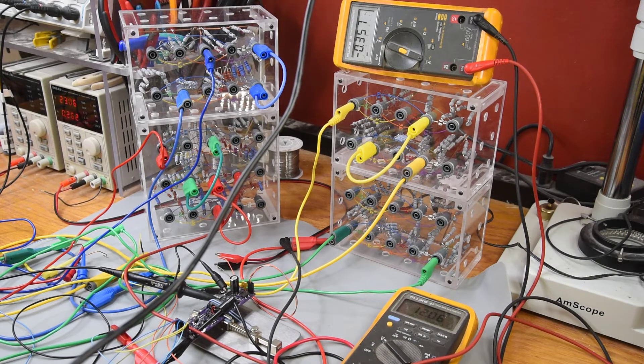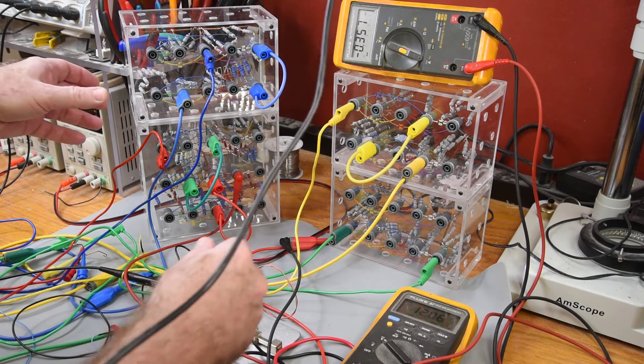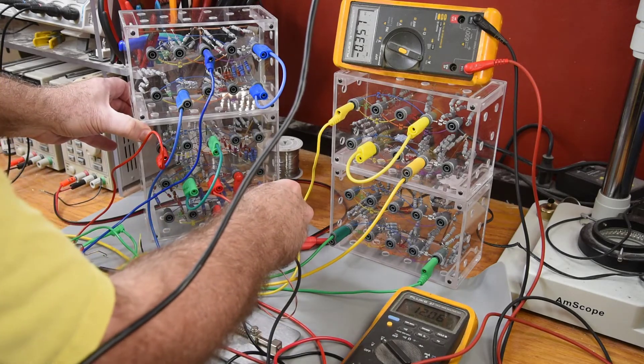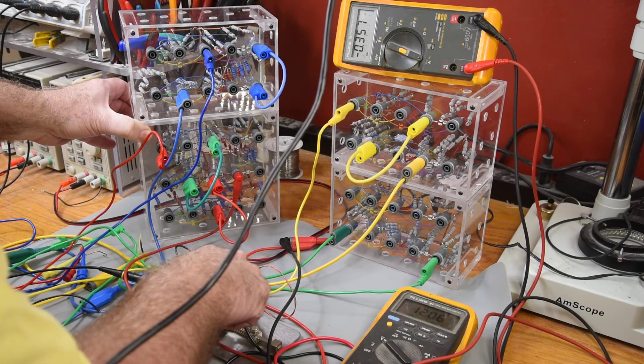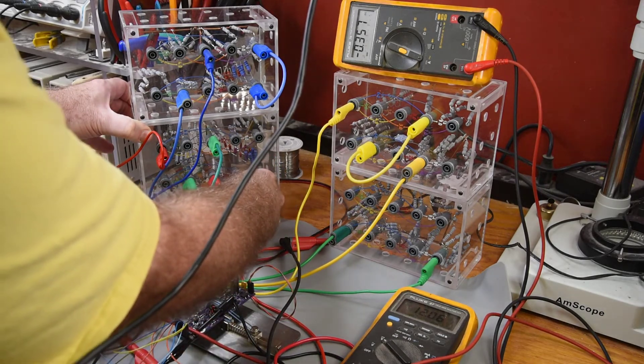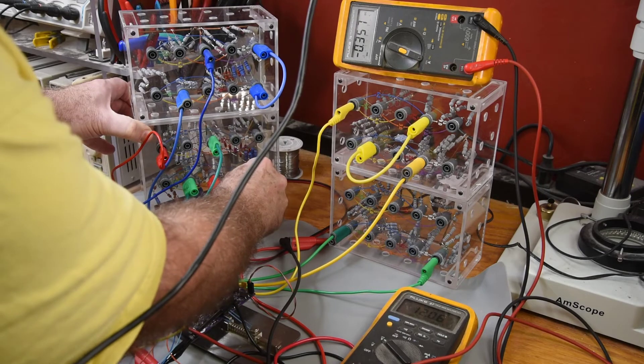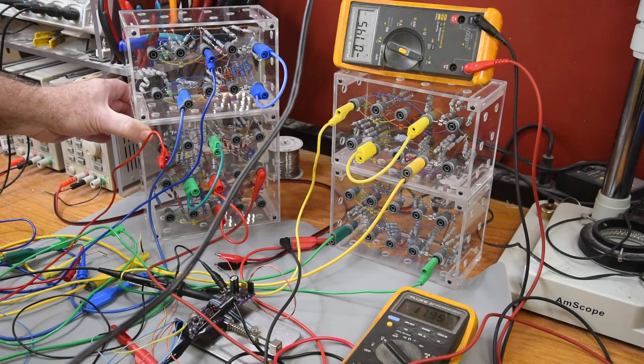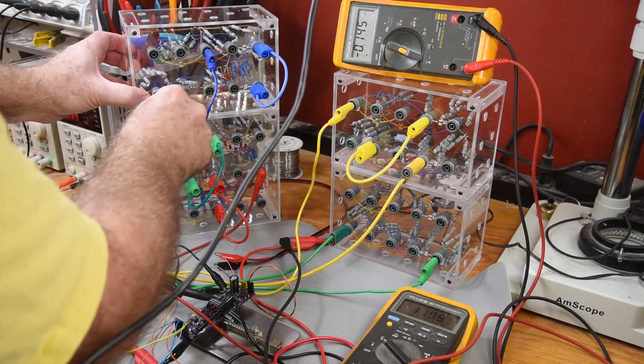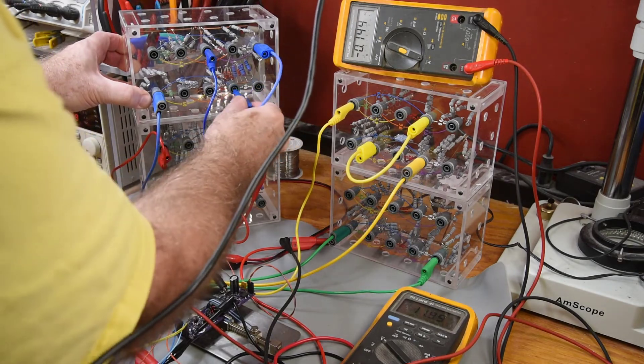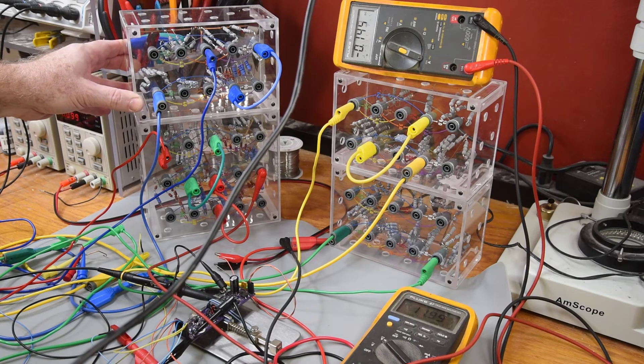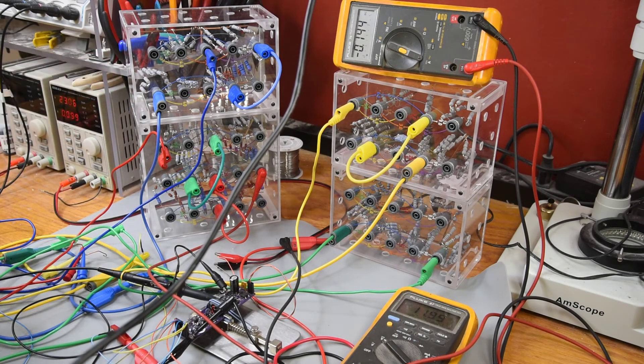I can already see that I much prefer the 1 to 999 ohm box over the 1 to 99. So any refinements to the boxes will include going with the full range. Adding 5 jacks and 4 resistors just doesn't make much of a difference in cost or in the time it takes to make one. And it does add so much more versatility. I really would like to get 1 to 999 ohms in a box the size of the 1 to 99. I just need to figure out a way to dissipate the resistor heat a little better. So this project is not over. This is just the first stab at it. Thank you for watching.